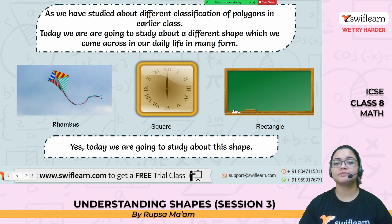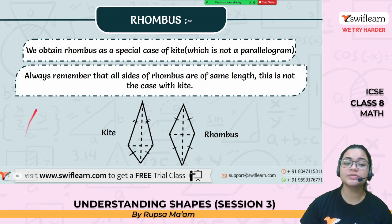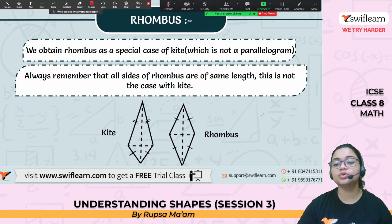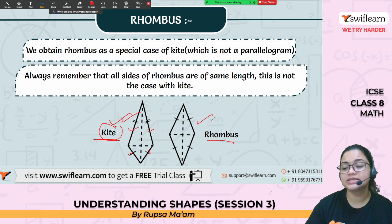We obtain rhombus as a special case of kite which is not a parallelogram. Always remember that all sides of rhombus are of the same length. This is not the case with kite. In rhombus, all four sides are equal length, but in the case of kite, this side and this side is equal, and this side and this side is equal, but not all four. So both are separate.